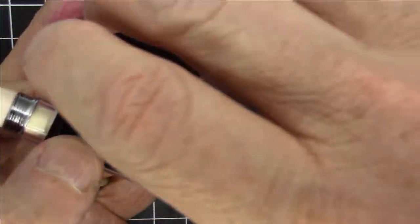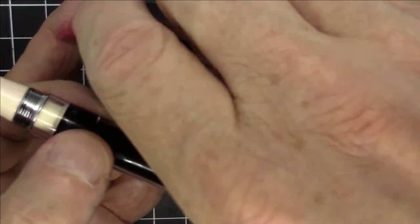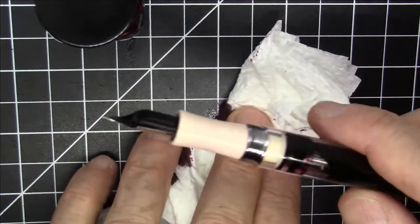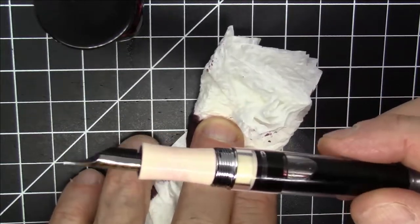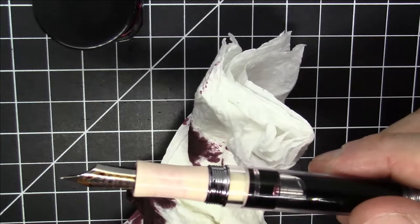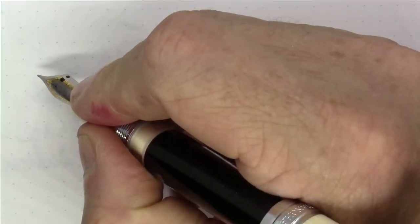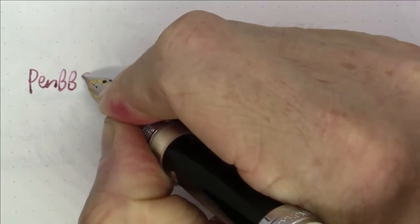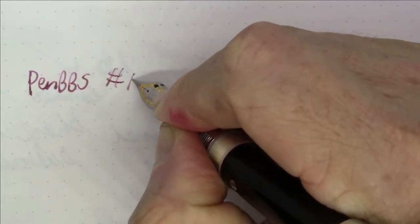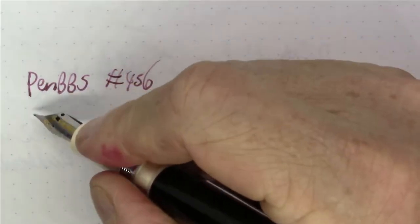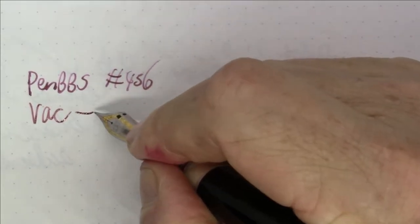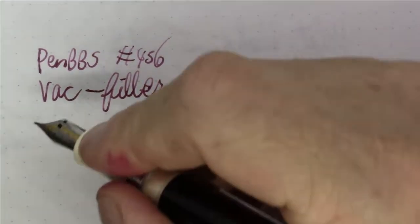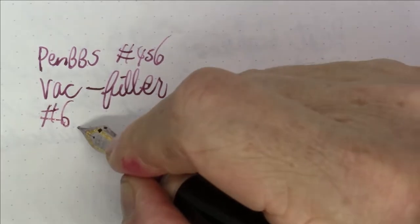Of course, pens were meant to write and you want to see this pen write and I'm going to show you that right now. Okay folks, what we're writing with here today is a PenBBS number 456. This is a vac filler and this has a number six steel nib in fine.